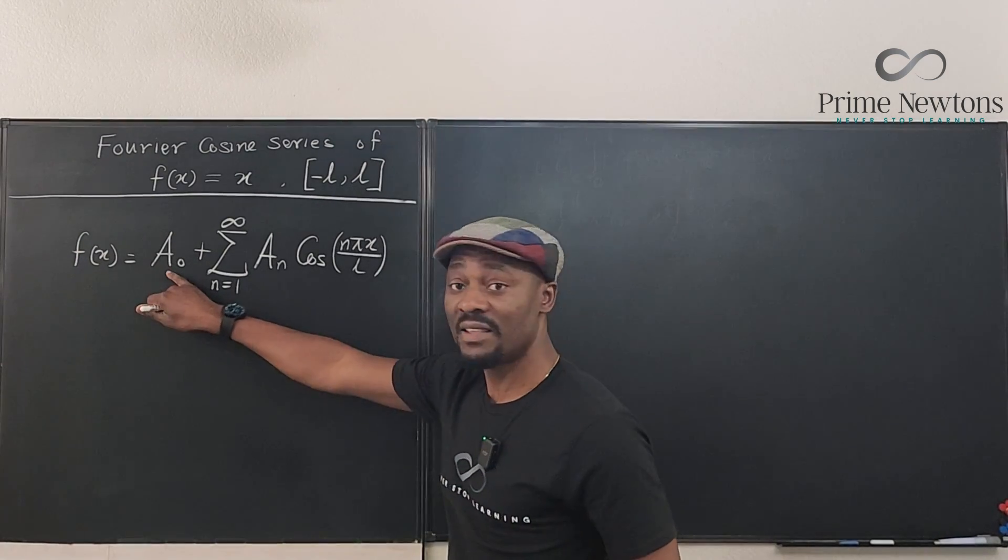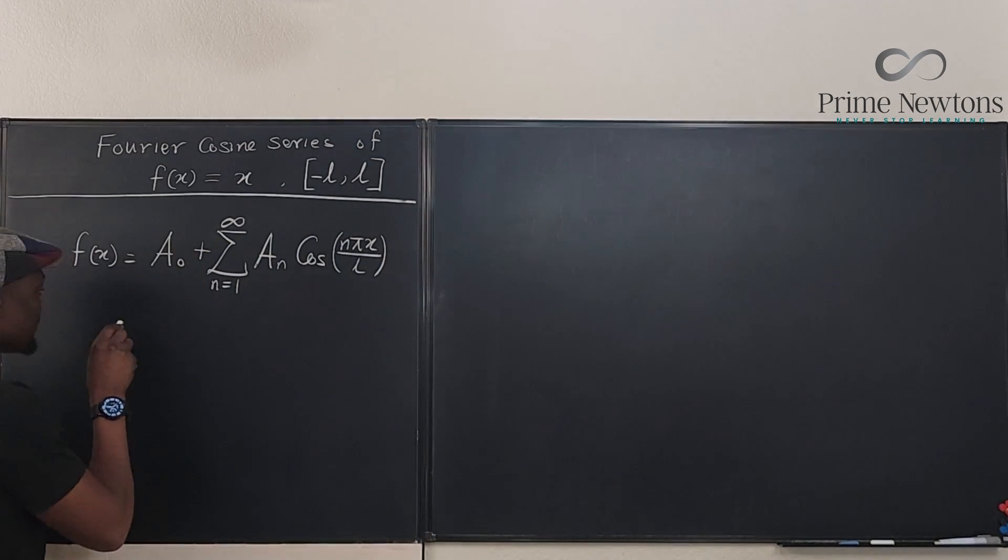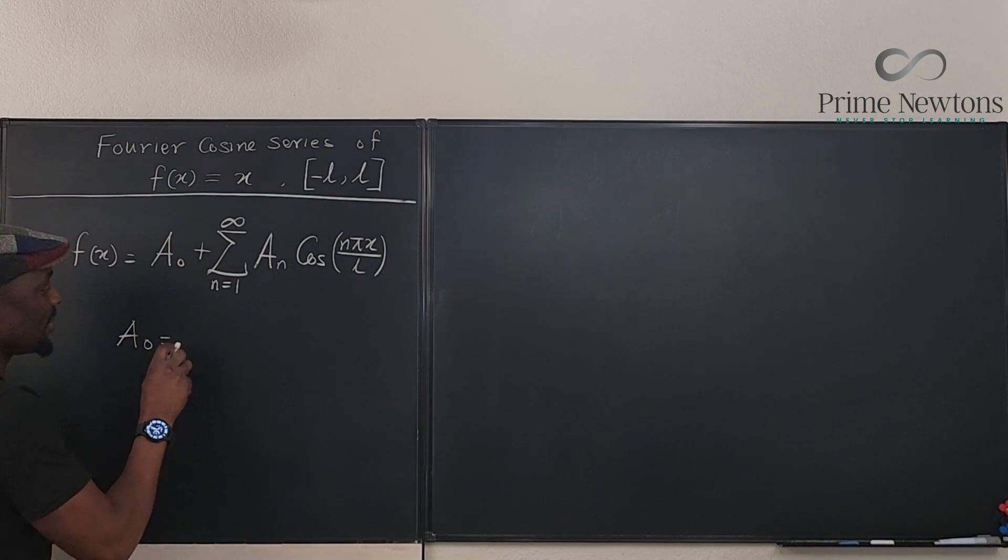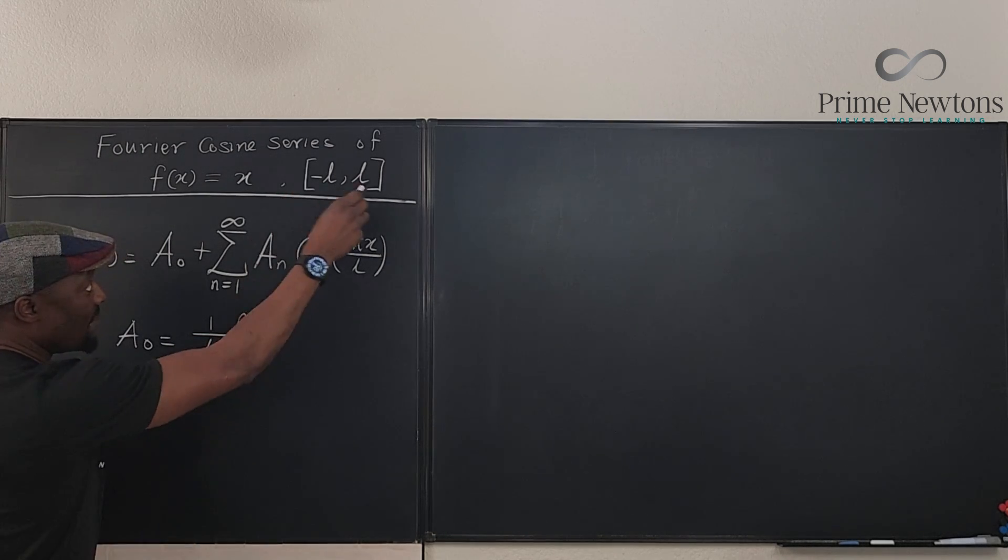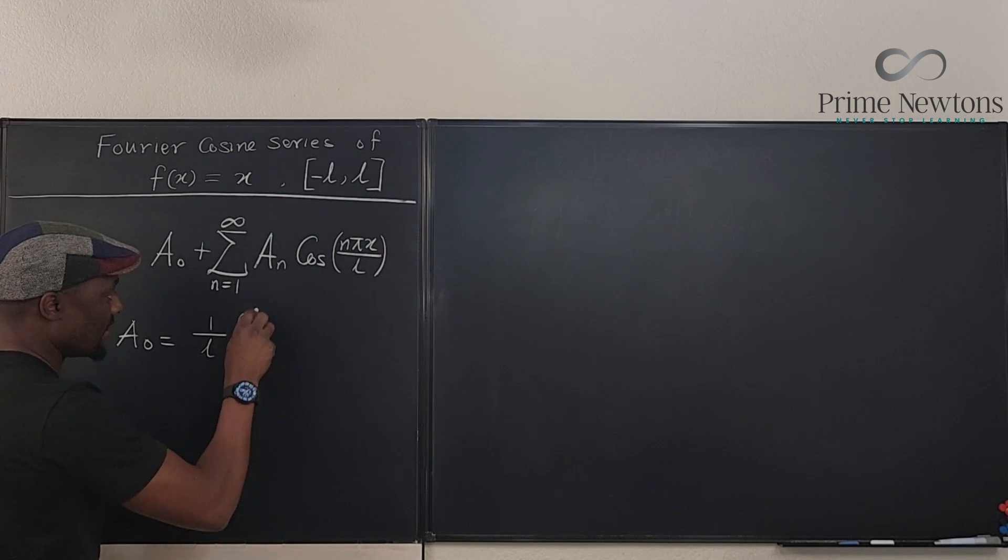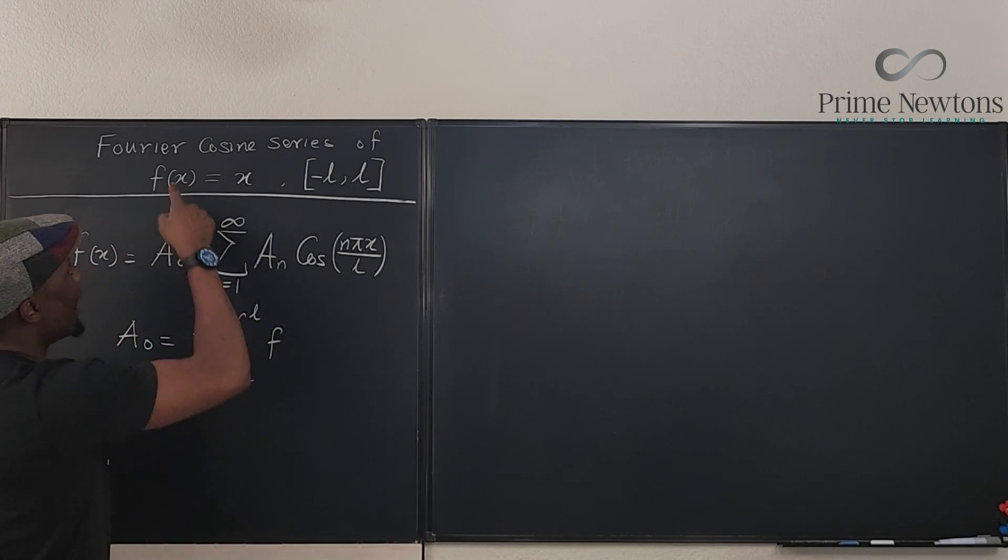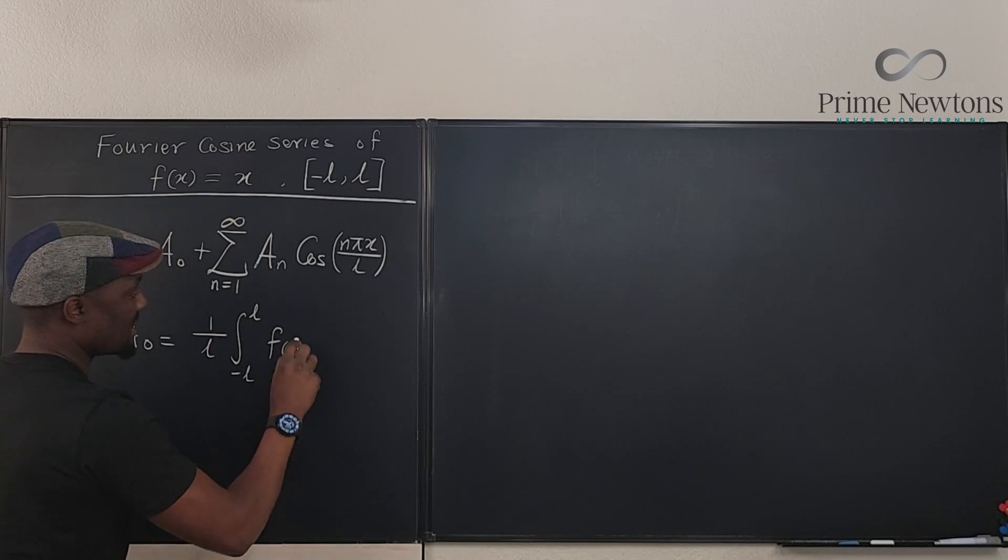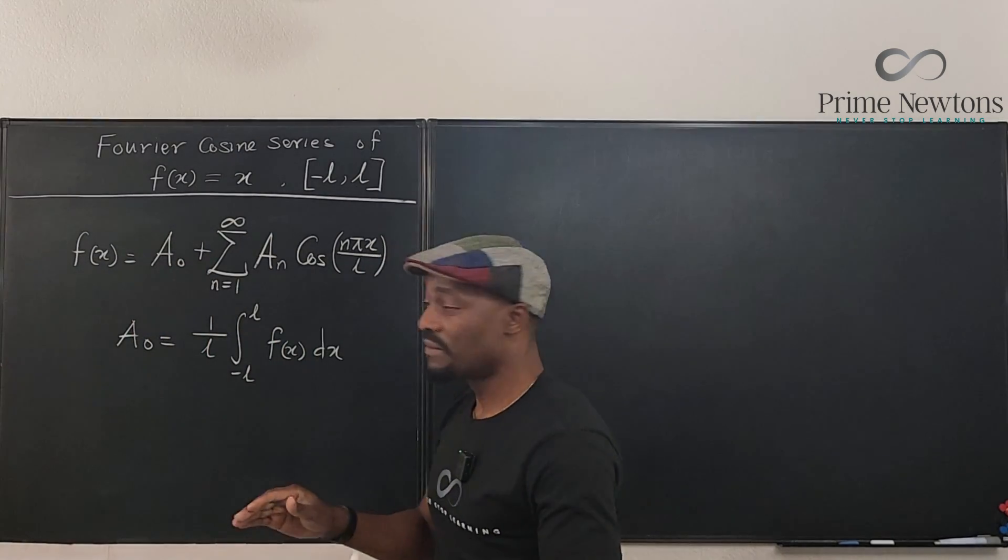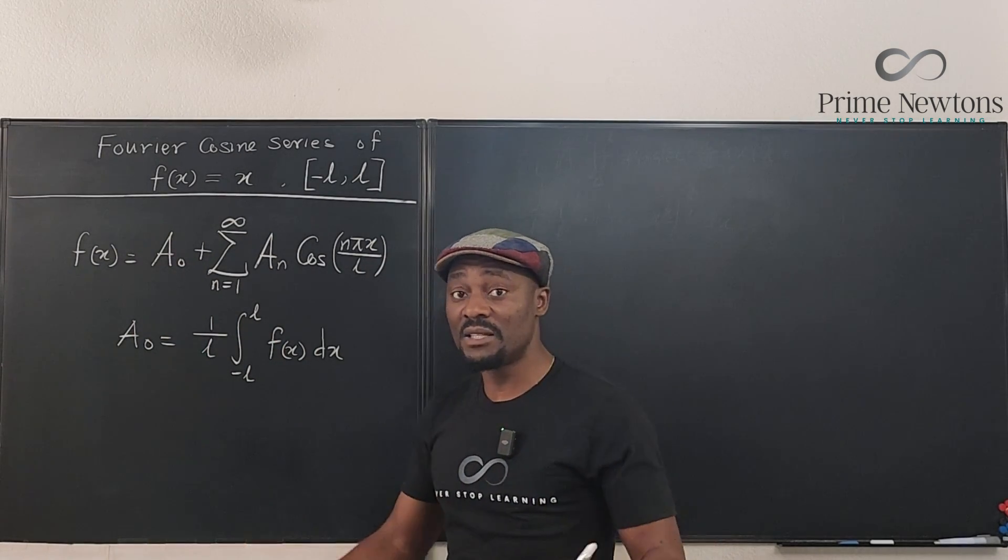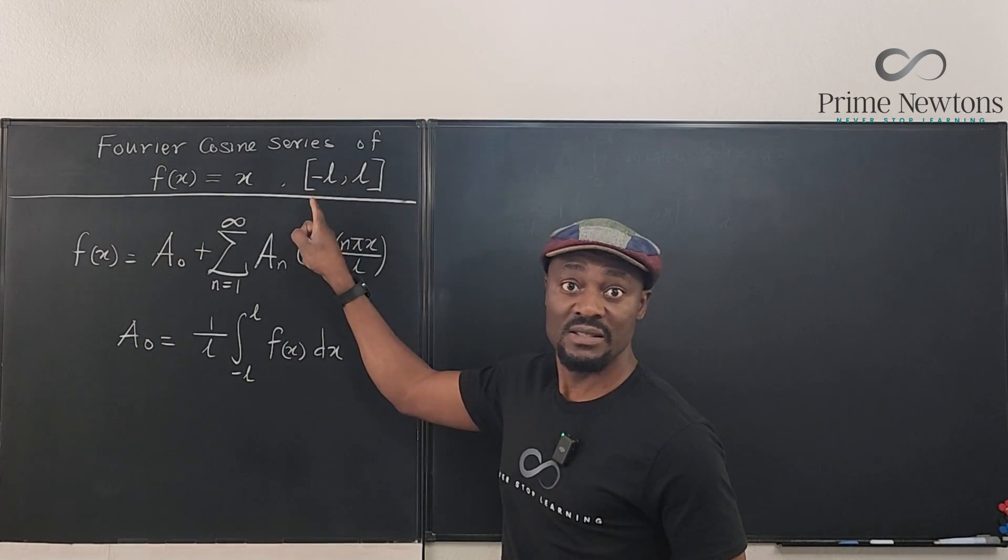You have to know how to find this and how to find this. So what is a_0? We know that a_0 is basically 1/L going from the interval negative L to L of the function that you are working on, f(x) = x. That's it. Now, if your interval is not from negative L to L, if it is from zero to L, it means you're going to need two of it to be able to complete this.